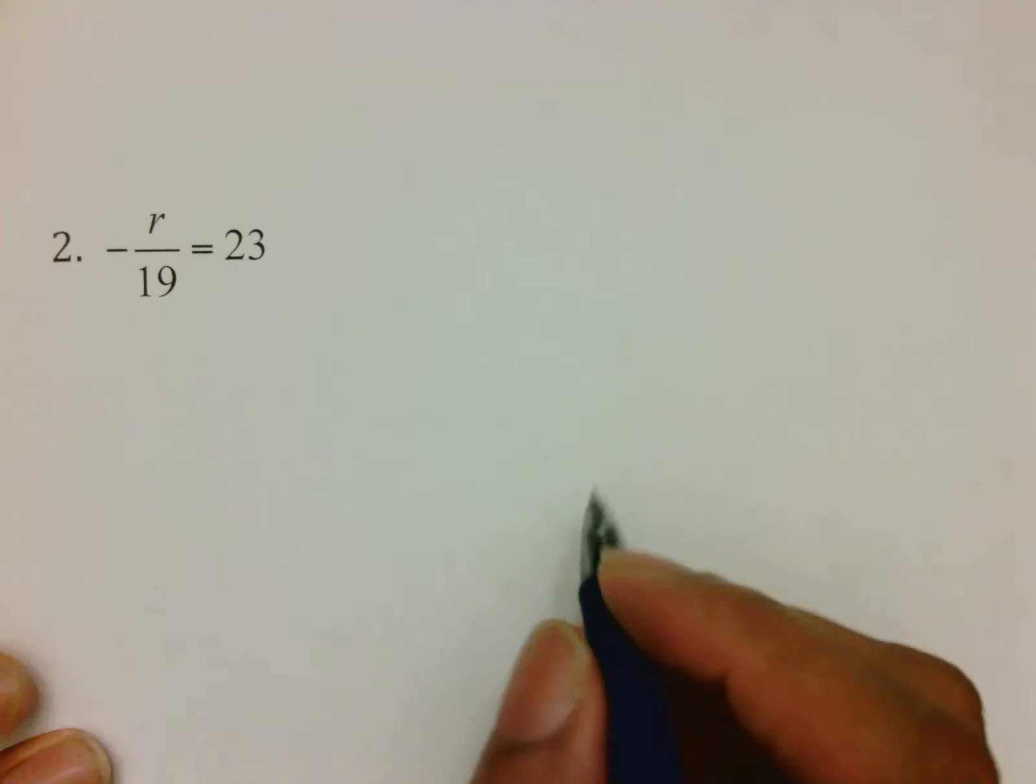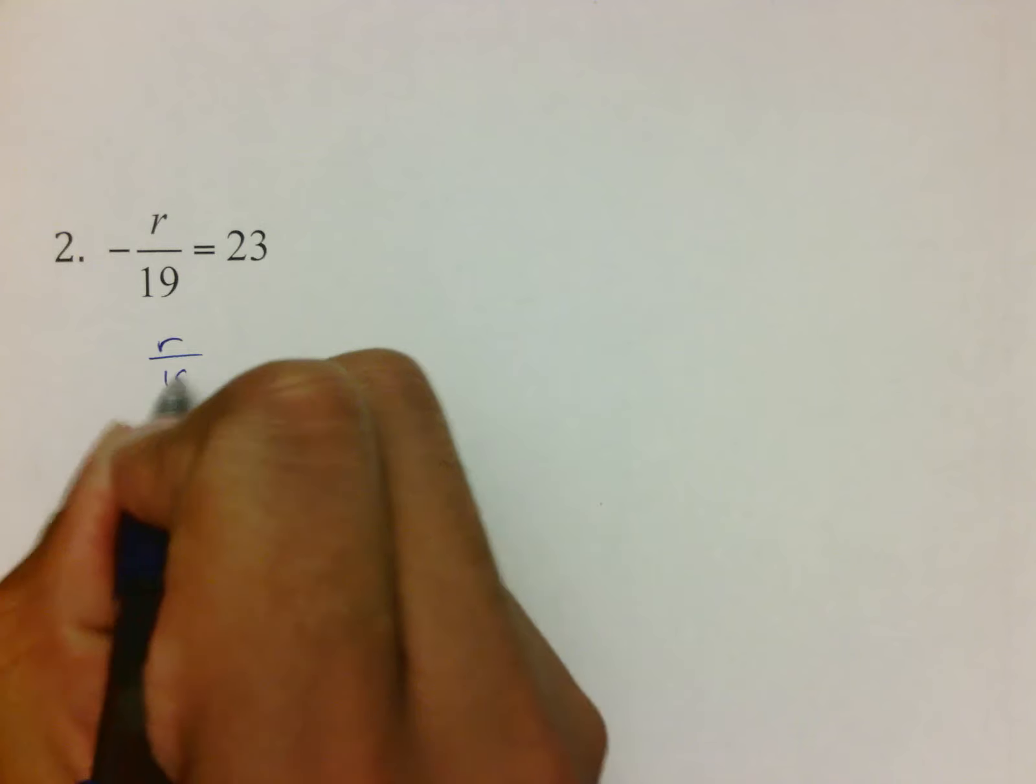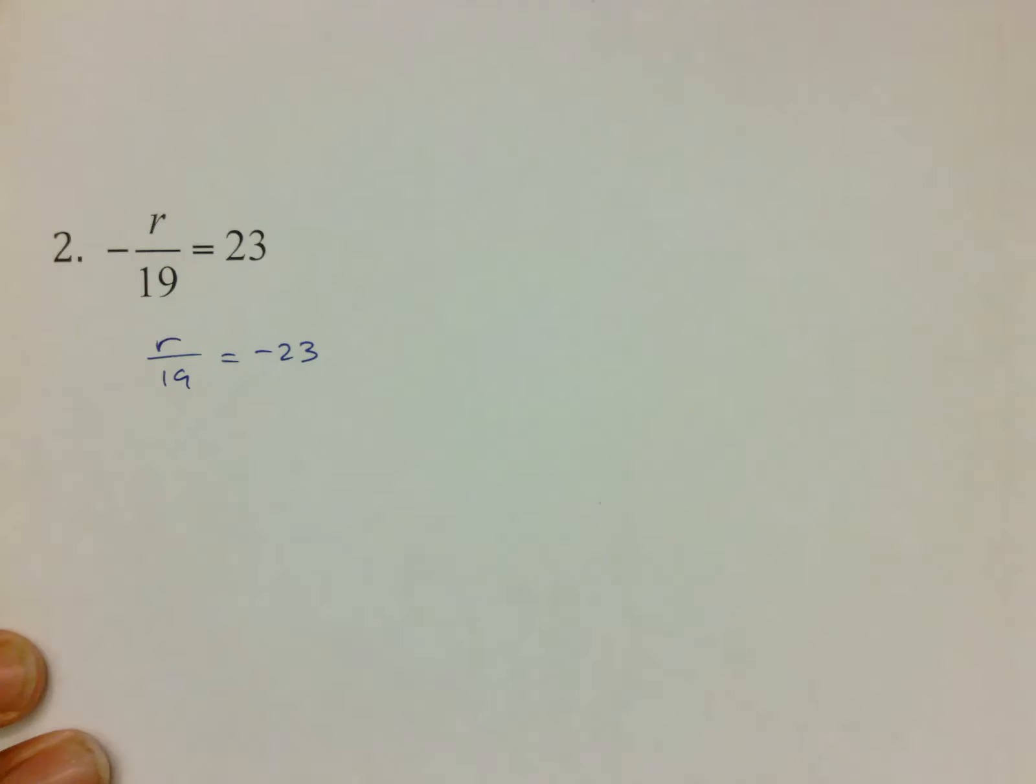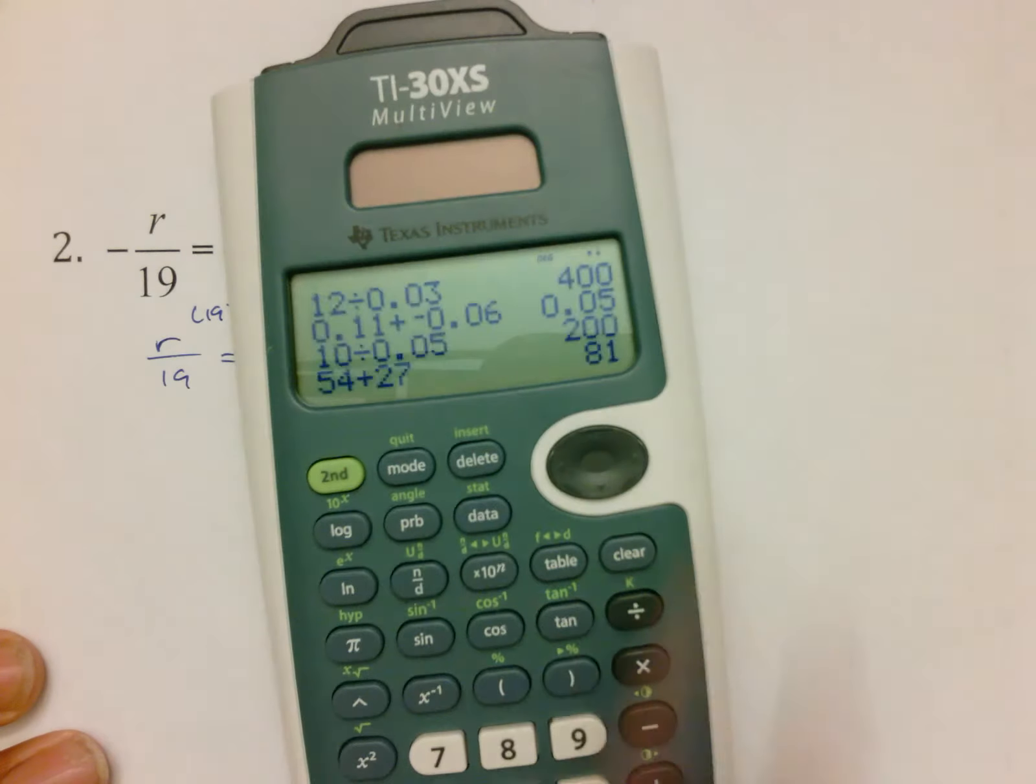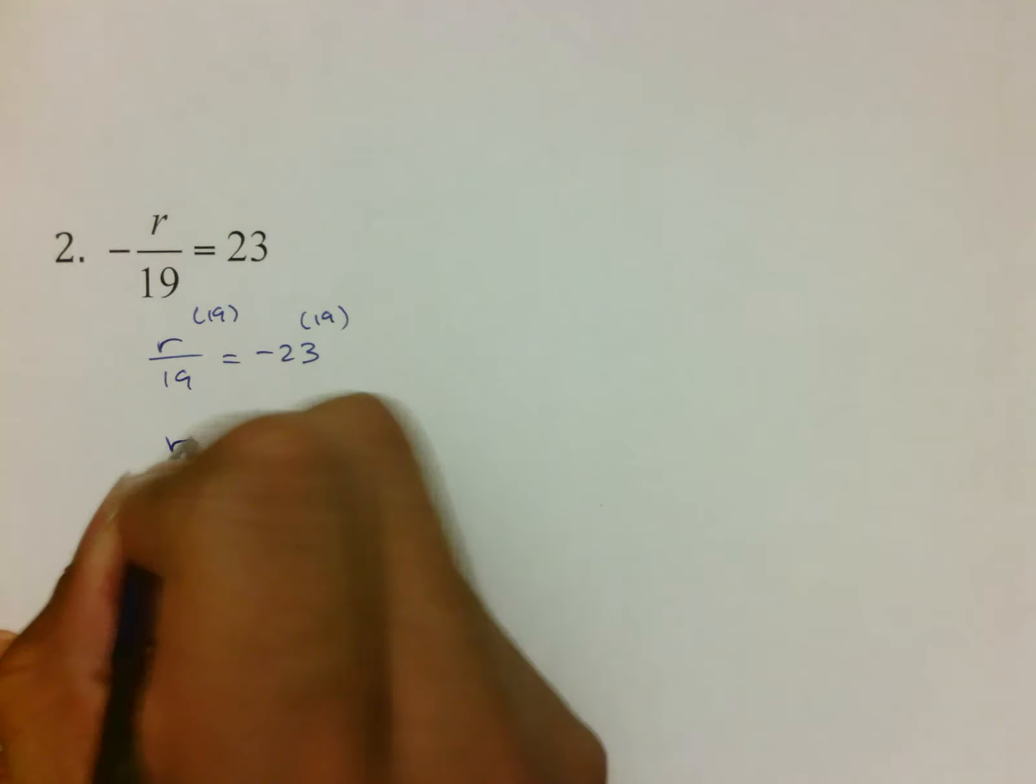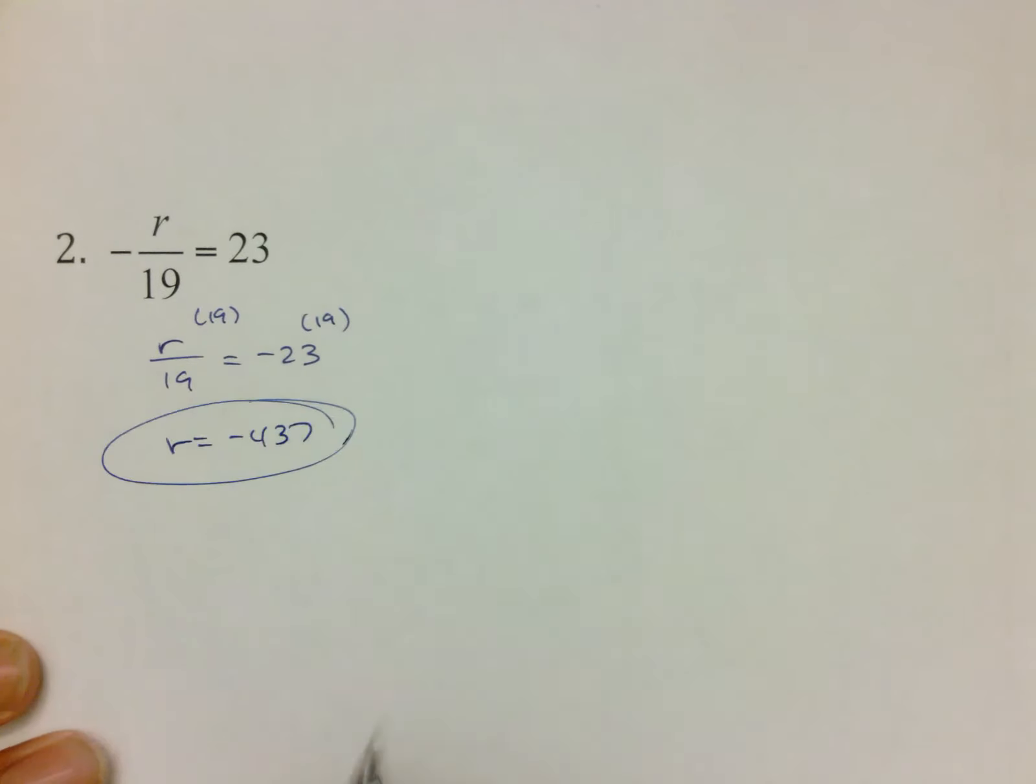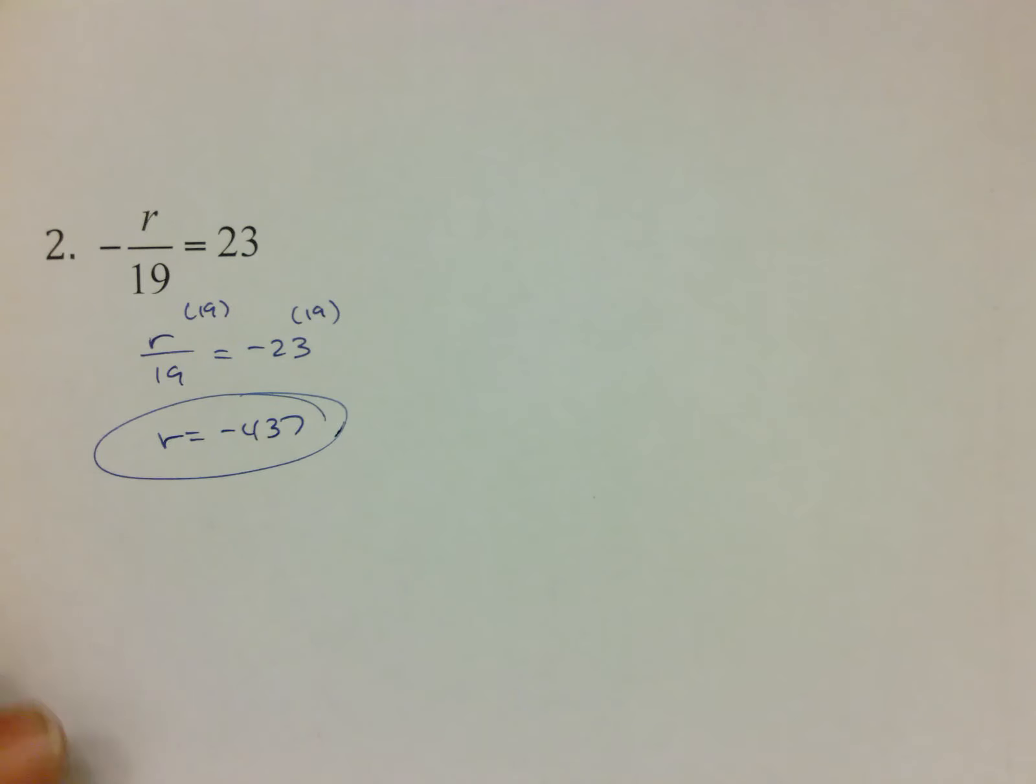Number 2 is negative r over 19 equals 23. The first thing I would do because my fraction is negative is turn r over 19 positive. Just don't forget to make your 23 negative and then multiply both sides by 19, which is negative 437. So again, negative fraction, flip it first, multiply second, make your life easy. Just be careful because if you're not, then you could end up missing a very easy question there.